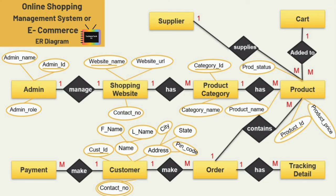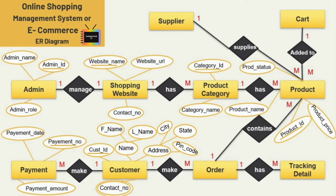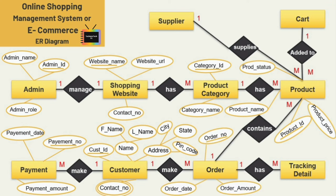Next is the address attribute. User address is a composite attribute, as an address is composed of other attributes such as pin code, state, and country. Next we have the entity payment — for this I'm taking three attributes: payment number, payment date, and payment amount. Payment number is the key attribute.